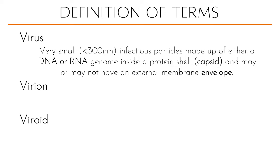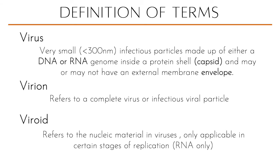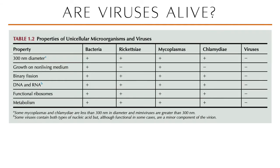A virion refers to a complete virus or infectious viral particle — meaning if that virus has an envelope, a capsid, and a nucleic acid. If anything is missing from those three components, you cannot call it a virion. Once a virion attaches to host cells, it sheds its capsid. A viroid refers to the nucleic material in viruses, referred to in certain stages of viral replication. So: are viruses alive?